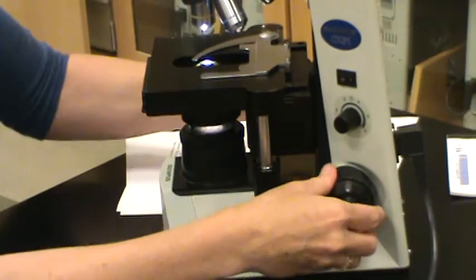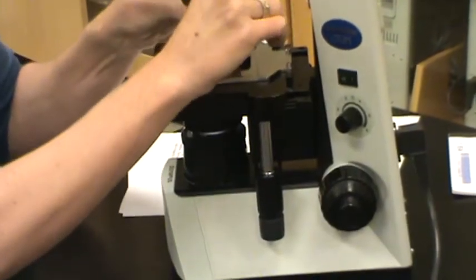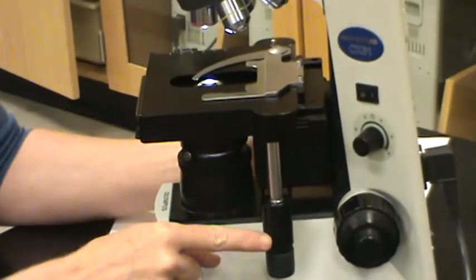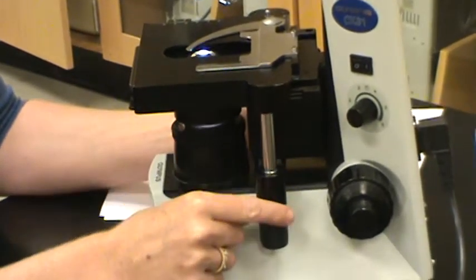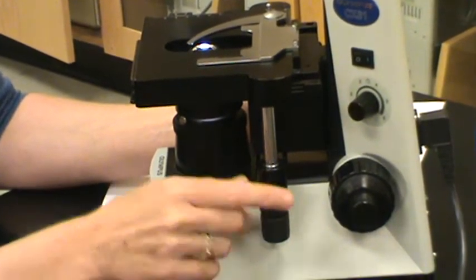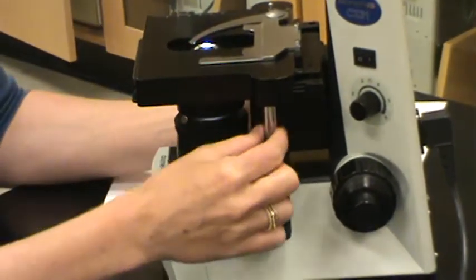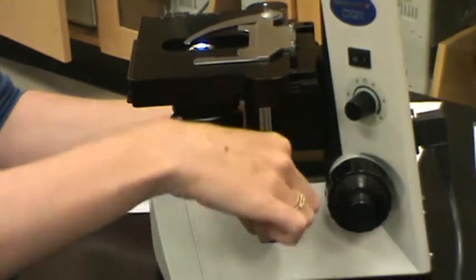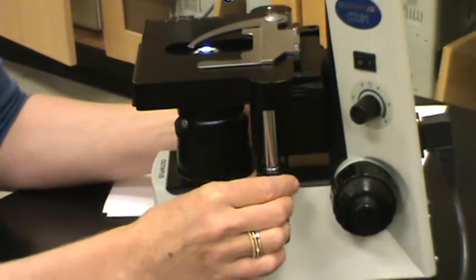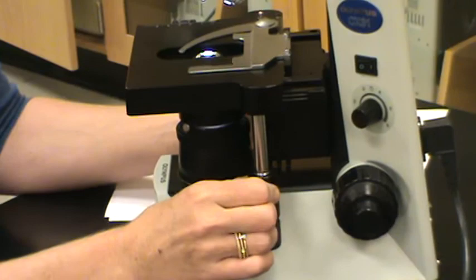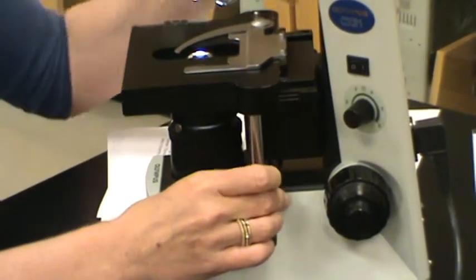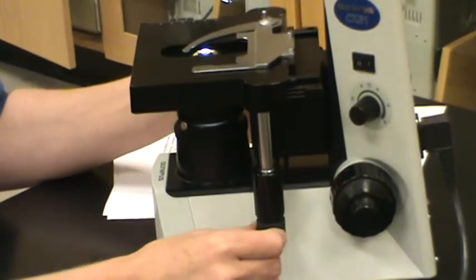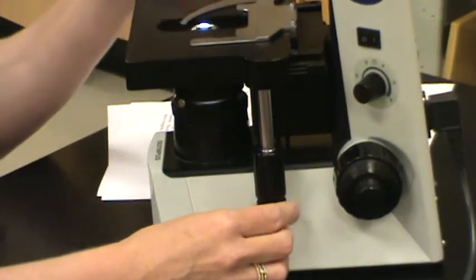Some other controls that are important are here. These are knobs that allow you to move the stage. These are found to the right of the stage dangling down. The upper knob moves the stage toward you or away from you, and the lower knob moves the slide left to right.